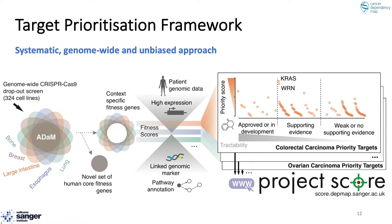Using these data sets, we developed a systematic approach to nominate and prioritize new oncology targets. We began by identifying genes required for the fitness of a subset of cancer cell lines — so-called context-specific cancer genes. Core fitness genes were excluded because they were more likely to be associated with non-selective toxicity in normal healthy cells. We integrated fitness scores for each gene with evidence that the target is perturbed in patients, whether the dependency can be linked to a genetic biomarker, and whether there was pathway-level evidence of importance. We also integrated tractability evidence to determine the potential drug-ability of each target.